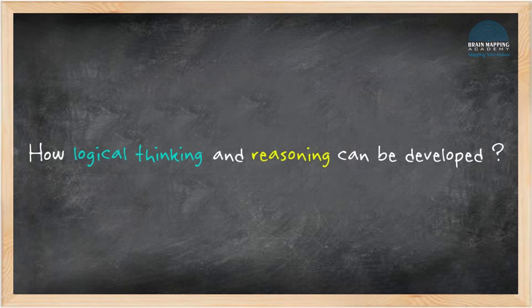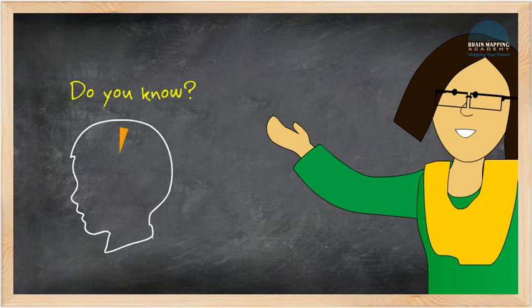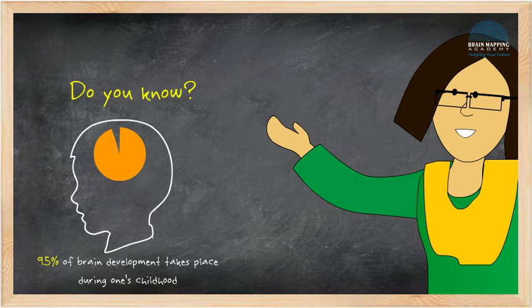Now the question arises, how can logical thinking and reasoning be developed? The younger we catch them, the better, because as much as 95% of the brain development takes place during one's childhood.